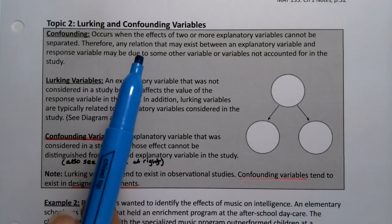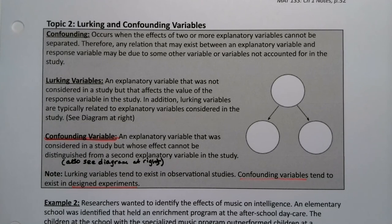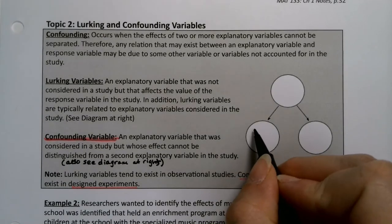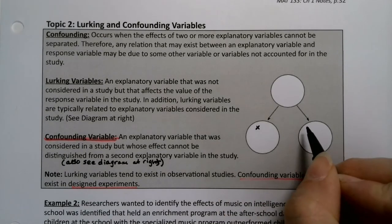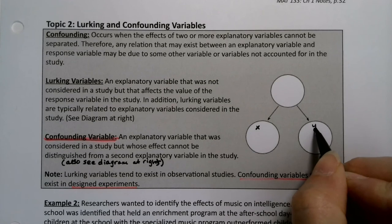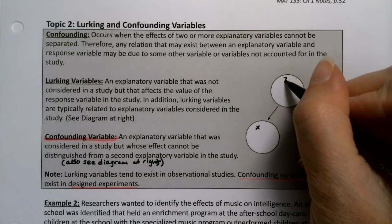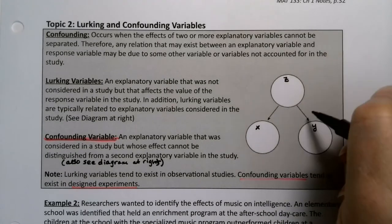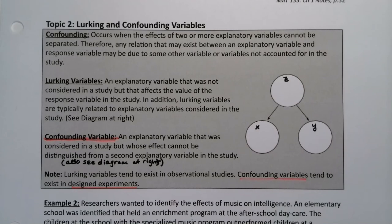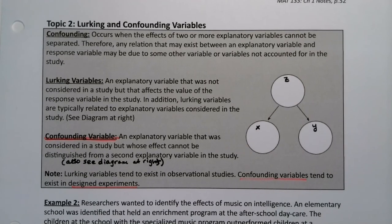So maybe there's something else going on. If you see a relationship between X and Y, maybe there's something else that's making it happen. If I have X and Y, maybe there's a third variable Z that's affecting both of them that I can't account for in the study.